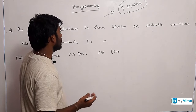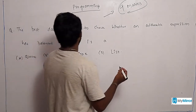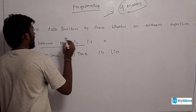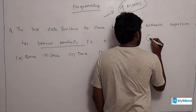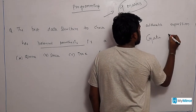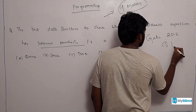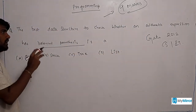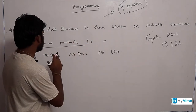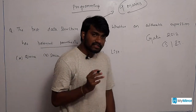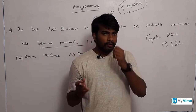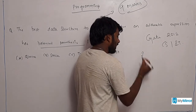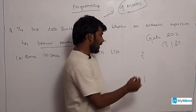I am explaining here a few example GATE questions. The first question: the best data structure to check whether an arithmetic expression has balanced parenthesis. So what is balanced parenthesis? When you take a C programming language, you have an open bracket as well as a closed bracket.